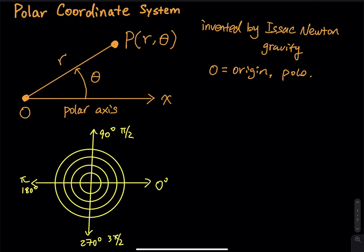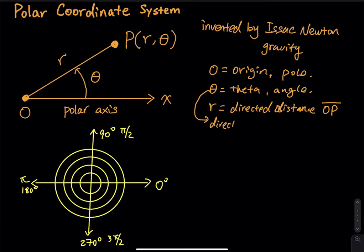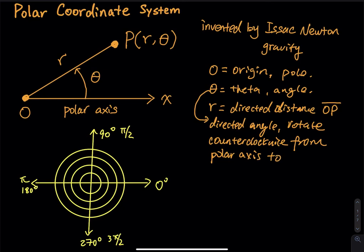And then we have an angle. So this is theta is an angle. And then do you see that there is an R. So what is R represent? R represent a directed distance from point O to point P. Directed distance of the segment OP. And then angle is the directed angle. So this one, other than theta, we call this a directed angle. So directed angle. And then it rotates counterclockwise from polar axis to OP. So rotate counterclockwise from the polar axis to segment OP.